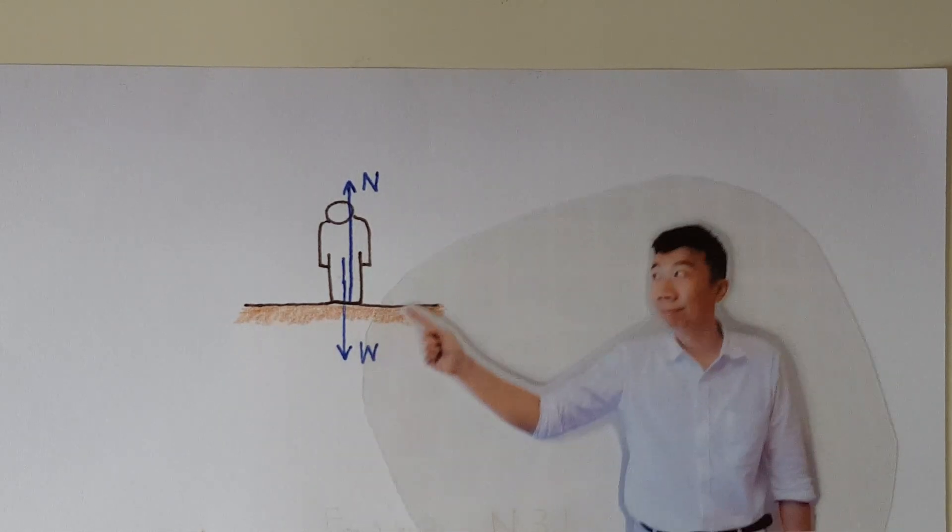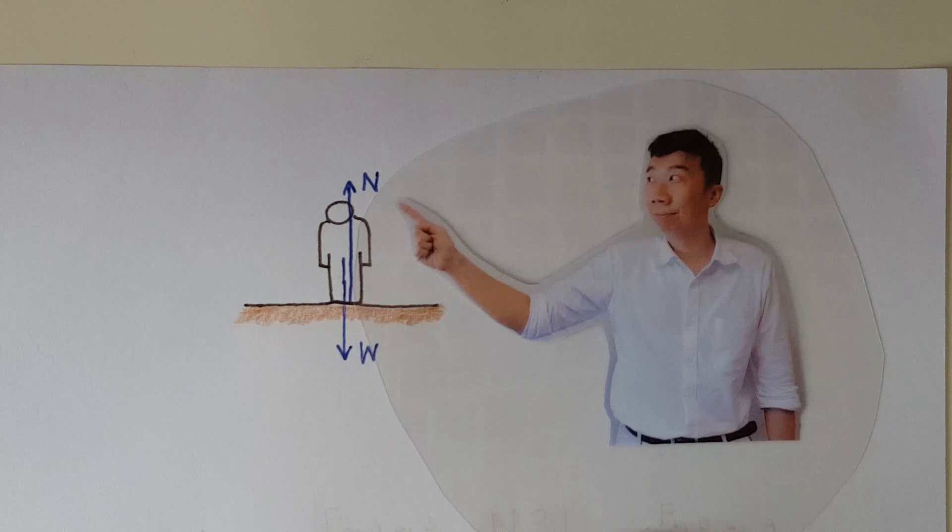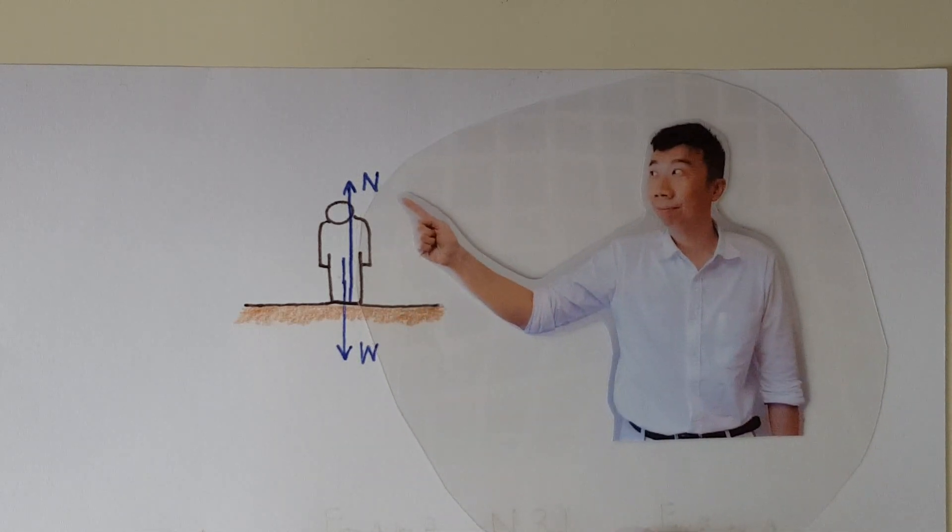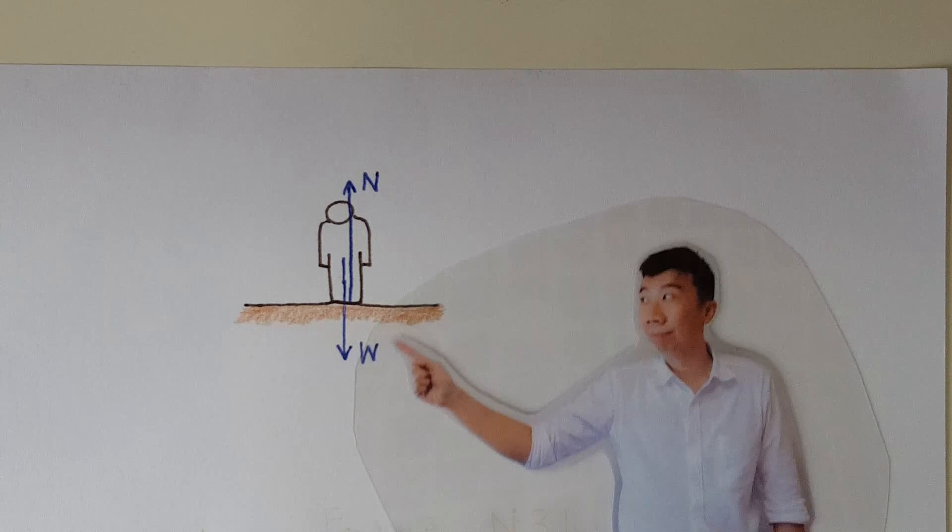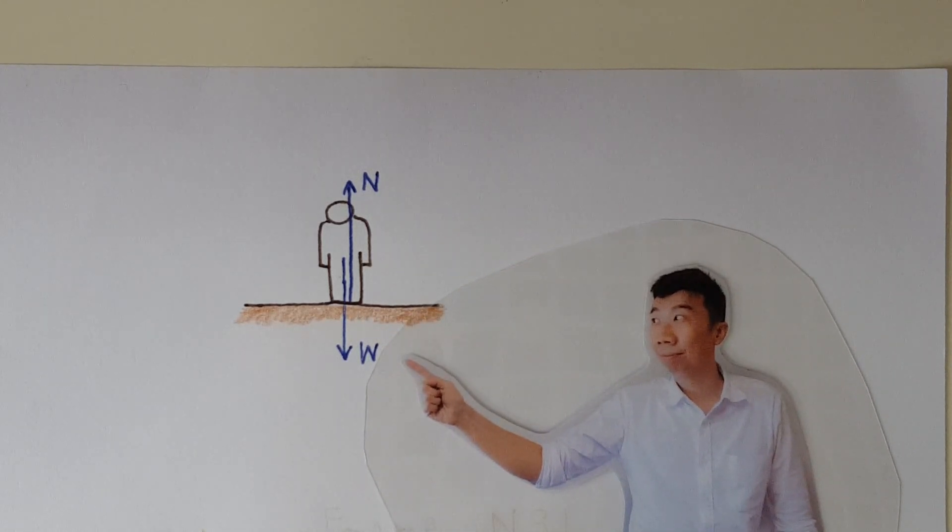Because these are the only two forces acting on you, and because you are at rest, these two forces must be equal in magnitude but opposite in direction, so that the net force is zero. So these two forces are equal but opposite only by circumstances.